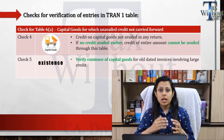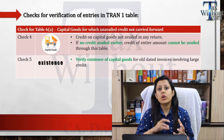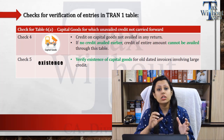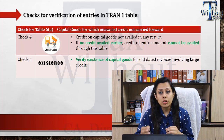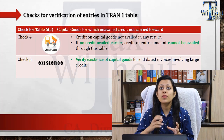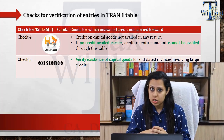Next, if the ITC claimed on account of capital goods is alarmingly high, the authorities may verify the physical existence of such capital assets. They may even conduct physical verification for such assets if they are alarmed about the value claimed in respect of ITC on capital goods.